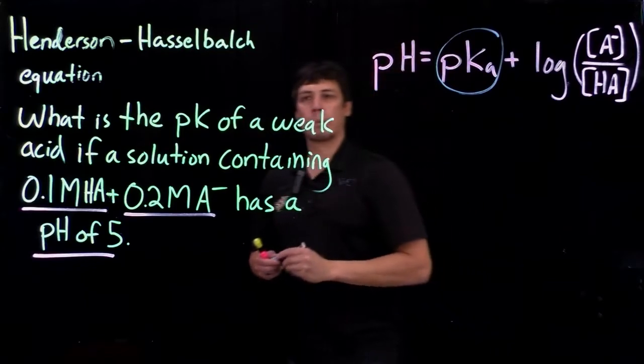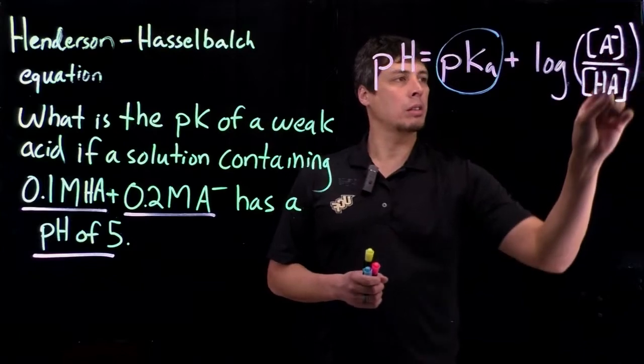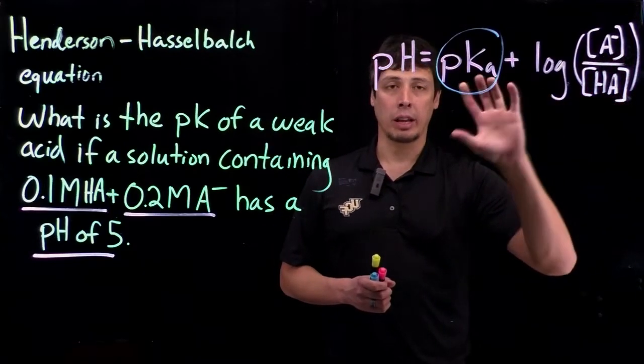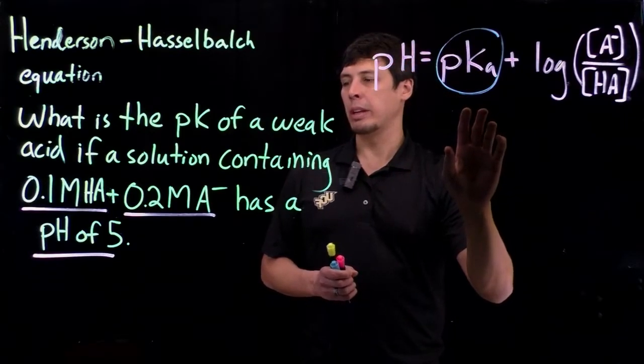So now remember in the last video we saw that when A- is equal to HA, at the half equivalence point, pH equals pKa.